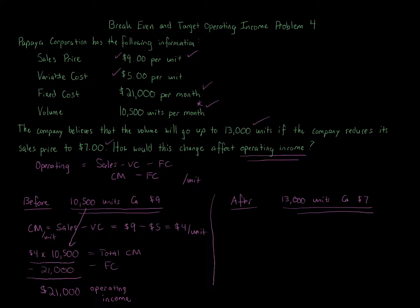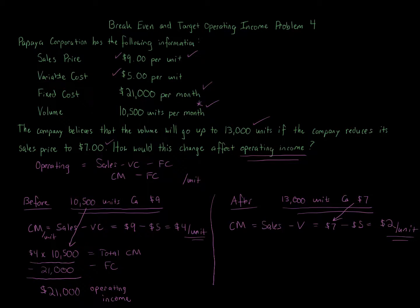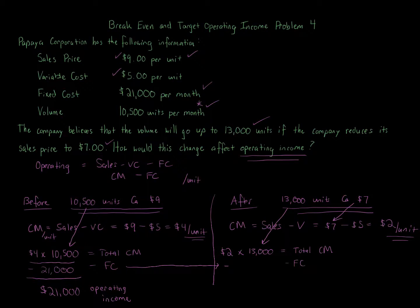Now for the after scenario: contribution margin is again sales minus variable costs. The sales price is now $7 per unit; variable cost remains $5 per unit. So the contribution margin per unit drops to $2 — down from $4 before. We multiply $2 per unit by 13,000 units to get the total contribution margin. Fixed costs remain the same at $21,000 — there's no change in fixed costs mentioned in the problem.